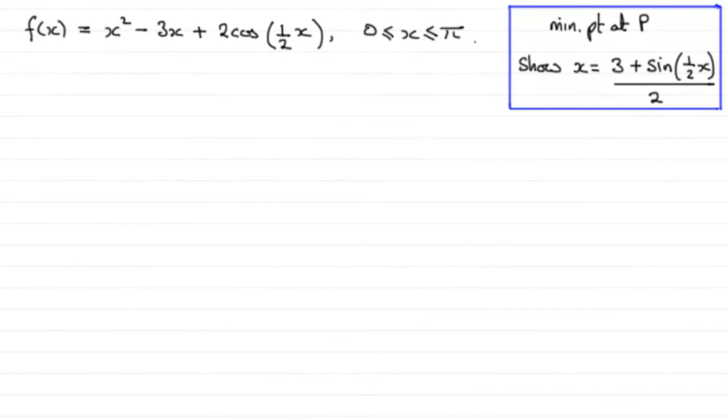Now for this part of the question we're told that the curve with equation y equals f of x has a minimum point P, and we need to show that the x-coordinate of P is the solution to this equation: x equals (3 plus sine of half x) divided by 2.